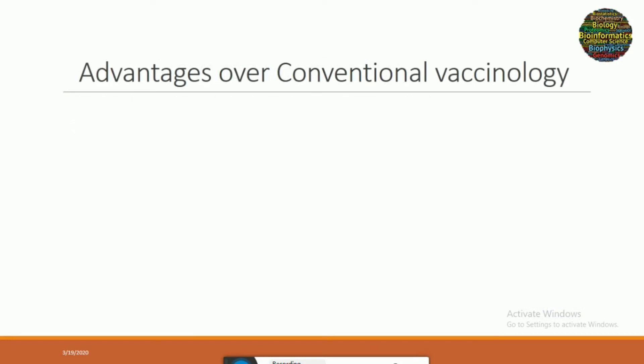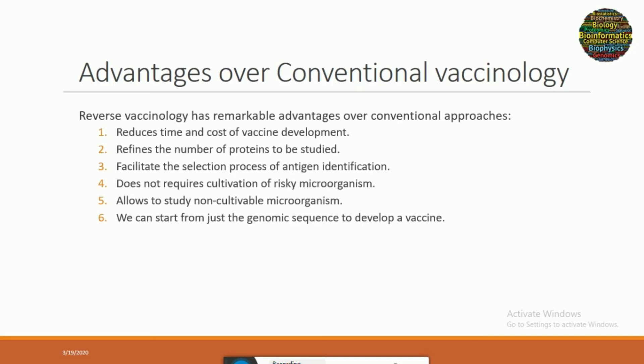What are the advantages of reverse vaccinology over conventional approaches? In conventional approaches you have to first isolate, then grow, then purify, then inactivate, and so on — a very complex process. In reverse vaccinology, you just need a genome sequence and that can be used to design the vaccine. In conventional approaches we have to cultivate those microorganisms, which can sometimes be risky to culture in a lab. In reverse vaccinology that disadvantage is addressed — we do not need to grow those microorganisms; we can simply get the genome sequence and use it to develop a vaccine.